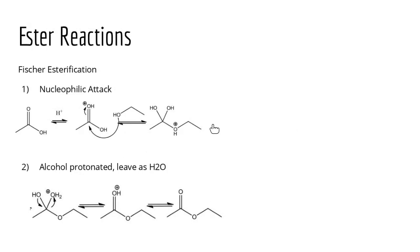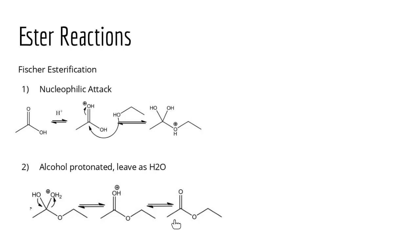Fisher esterification involves an ester and an alcohol under acidic conditions. The alcohol attacks the protonated carbonyl carbon, forming a tetrahedral intermediate. A proton shuffle occurs where a proton is transferred to one of the OH groups, causing it to leave as water, giving us a new ester. Make sure the attack is at the carbonyl carbon when drawing the ester product.